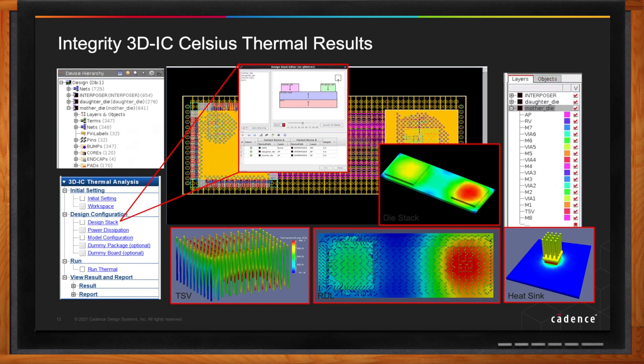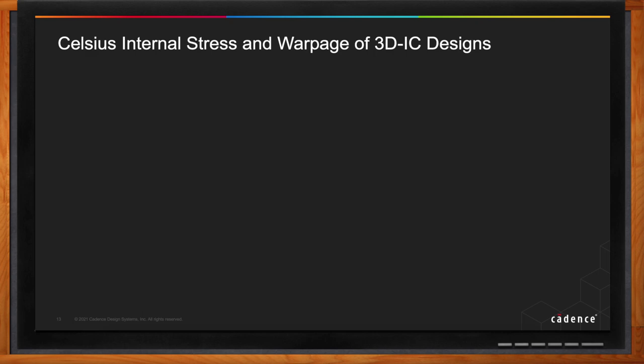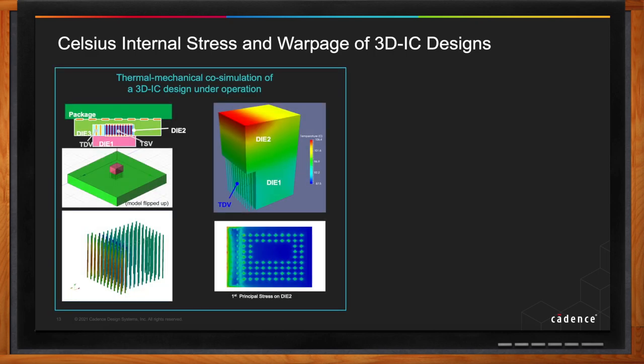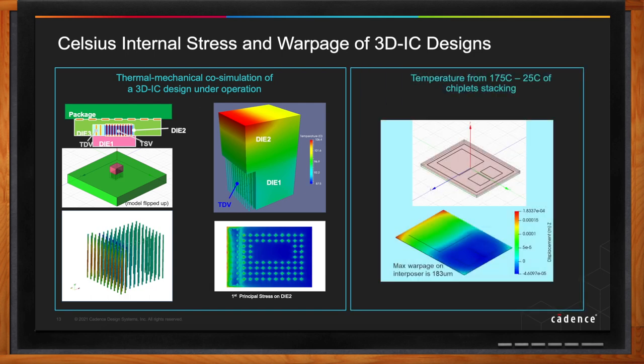Can the Celsius tool also deal with warpage and internal stress in the 3D IC? Yes. As a result of heating of the dies, there can be a bending of the material, and that has to be accurately modeled. Celsius can do a thermal-mechanical co-simulation of the whole 3D stack under operation, and for a certain range of temperature, it can show what the maximum warpage on a big interposer layer can be. Based on that, you can decide the location of multiple chiplets and make refinements to your design.